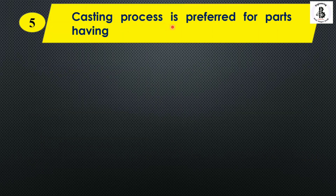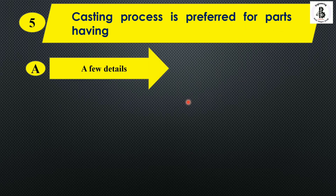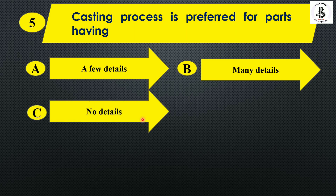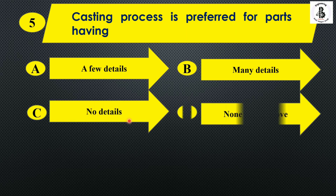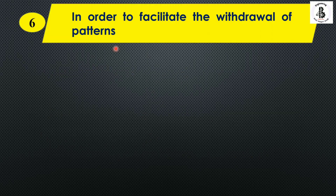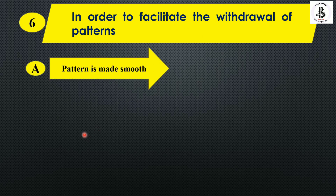The casting process is generally preferred for parts having — option A: a few details; option B: many details; option C: no details; option D: none of the above. In the casting process, it is generally preferred for parts having many details, so the answer is option B.